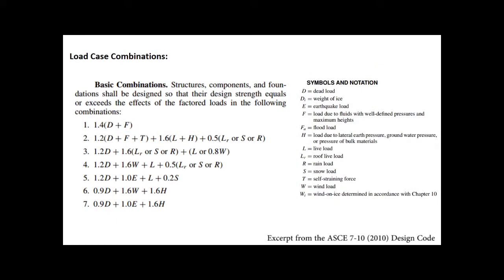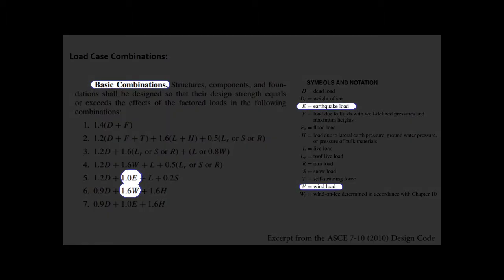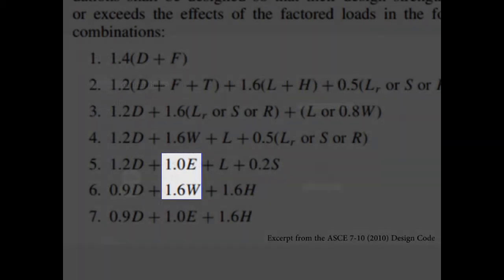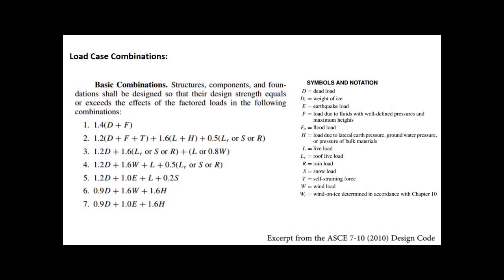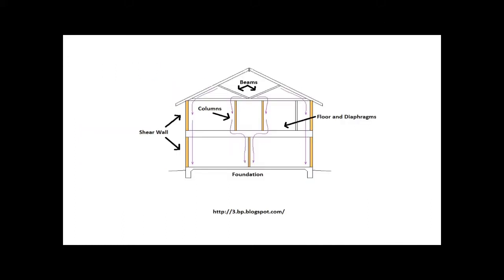Determining the lateral loads imposed on a structure has greater uncertainty compared with estimating its gravity loads. Therefore, load combinations used to estimate the component loads may apply amplification factors or require larger margins of safety against failure due to lateral loads. To ensure that a building can withstand all loads imposed during its service lifetime, it is important that load case combinations include both vertical and lateral loads. The design and construction of large-scale structures requires the use of a number of different structural components, each of which must adequately carry the expected demands.